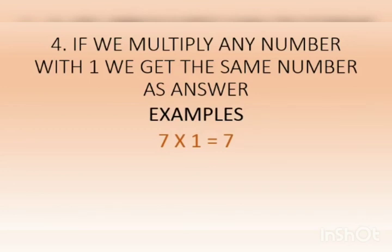Look here. 7 multiplied by 1. Here we are multiplying 7 with 1. So what are we going to get? The same number. What is the same number here? 7. So 7 multiplied by 1 is equal to 7.